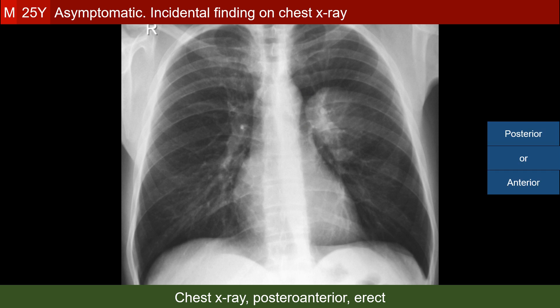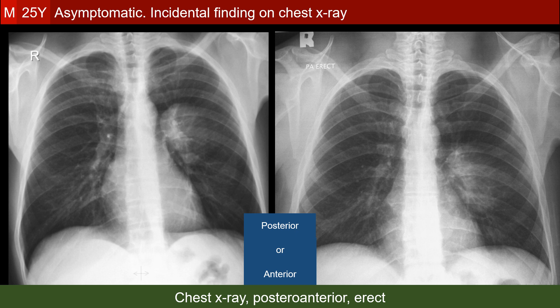Is this lesion posterior or anterior? This is a more difficult question to answer. We may be able to answer it if we have two postero-anterior x-rays with different positions of the central beam or different forward inclination of the patient. Here we have a perfect example: the opacity has changed its shape and position in response to the change in the central beam location or patient inclination.